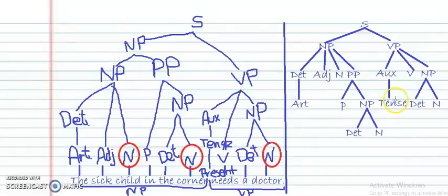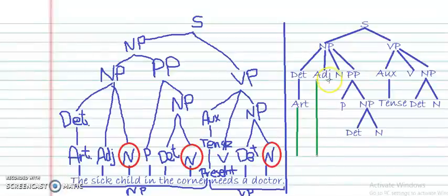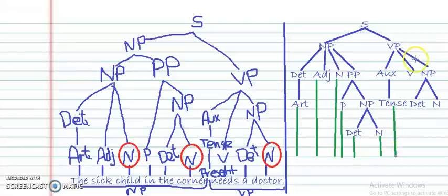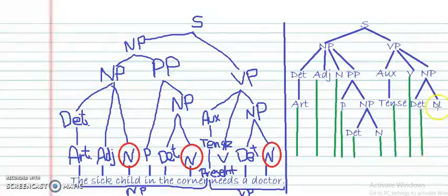Now that all categories are written and branches are in place, we can draw lines and write the actual sentence words at the bottom of each branch: the adjective 'sick', the noun 'child', the preposition 'in', the determiner 'the', the noun 'corner', the tense 'present', the verb, the determiner 'a', and the noun 'doctor'. Make sure not to forget any branches.